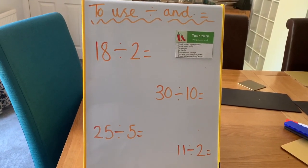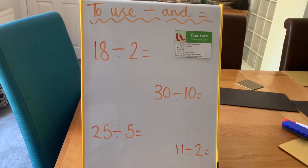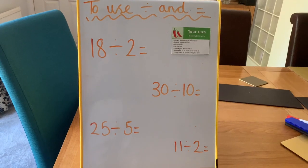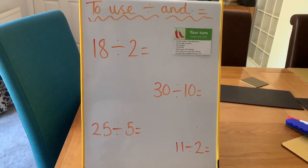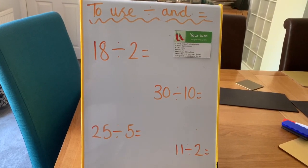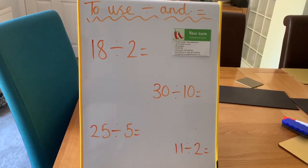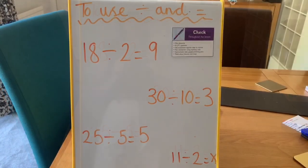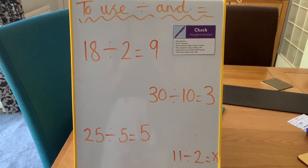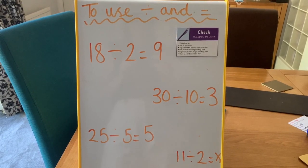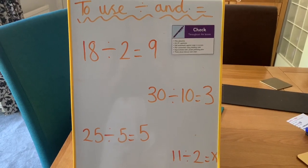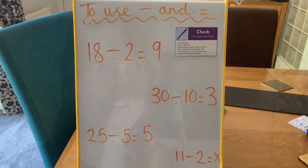Pause the video and have a go at these. There are four different number sentences. I wonder if all of them will work — will you be able to solve them and have equal groups for them all? Here's your check: it was possible to solve three of them, but 11 divided by 2 couldn't be done because 11 is not in the two times table. How did you get on?